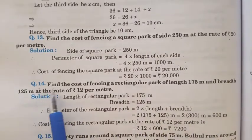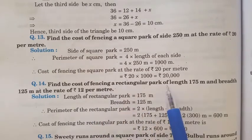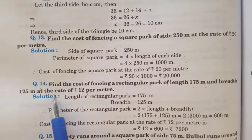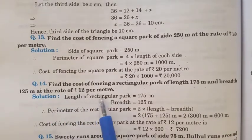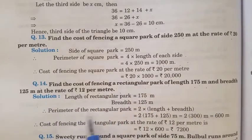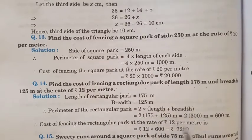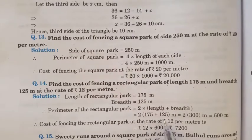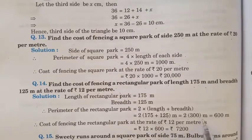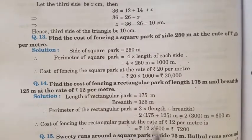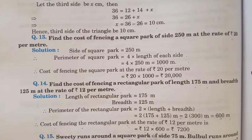Question 14: Find the cost of fencing a rectangular park, length 175 m and breadth 125 m, at the rate of Rs. 12 per meter. First find the perimeter: perimeter of rectangle = 2 into (L + B) = 2 into (175 + 125) = 2 into 300 = 600 meters. Cost of fencing = 600 into Rs. 12 = Rs. 7200.